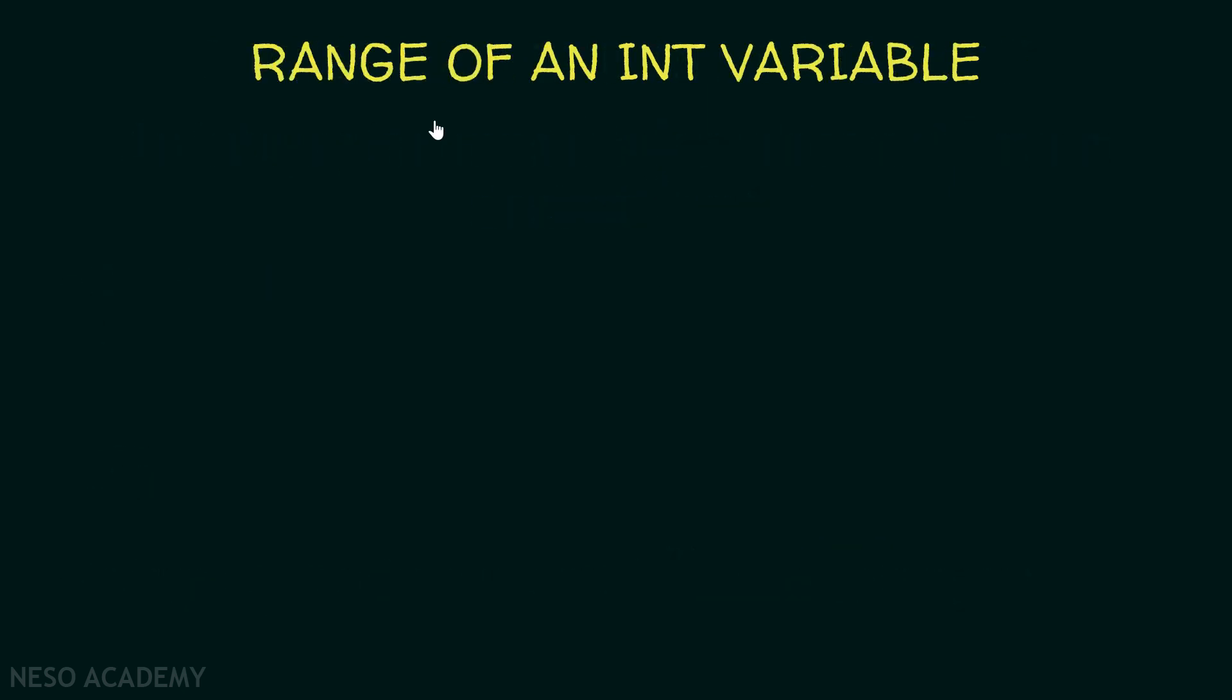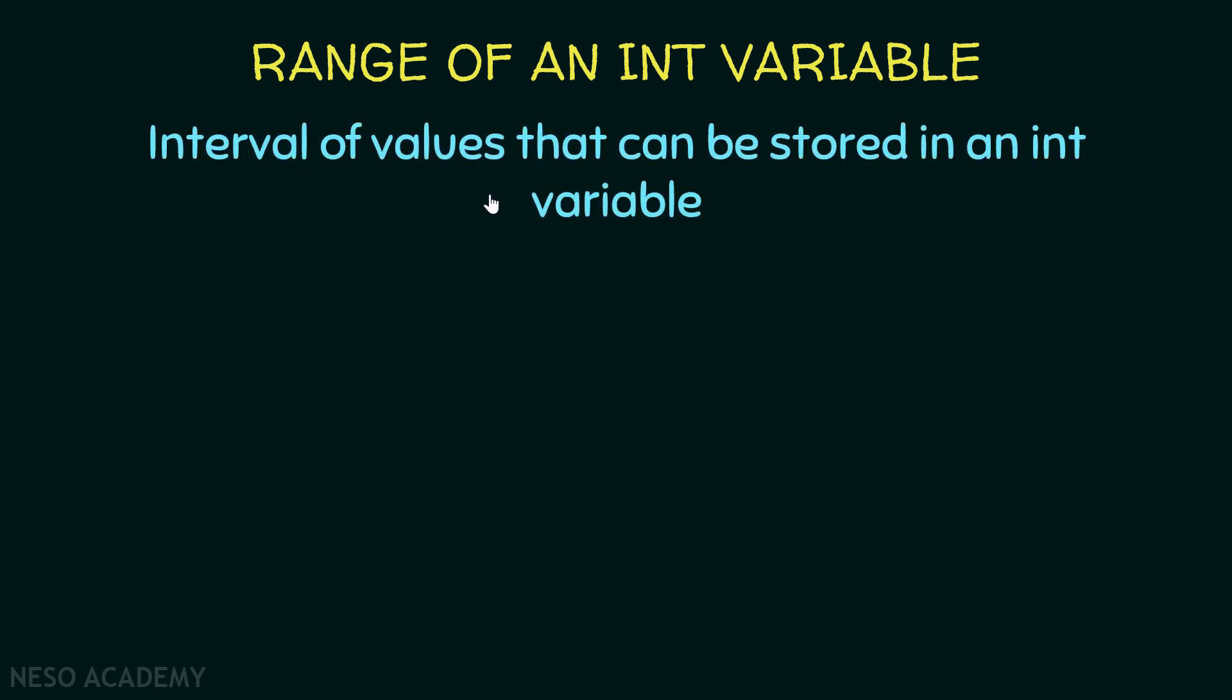So let's talk about the range of an int variable. What do we mean by this? Basically, it is the interval of values that can be stored in an int variable. So first, let's declare an int variable. We will do it like this: we will put the type and after that we will put the name of the variable followed by a semicolon. It is the same as before. The only difference is that now we are using the int type.